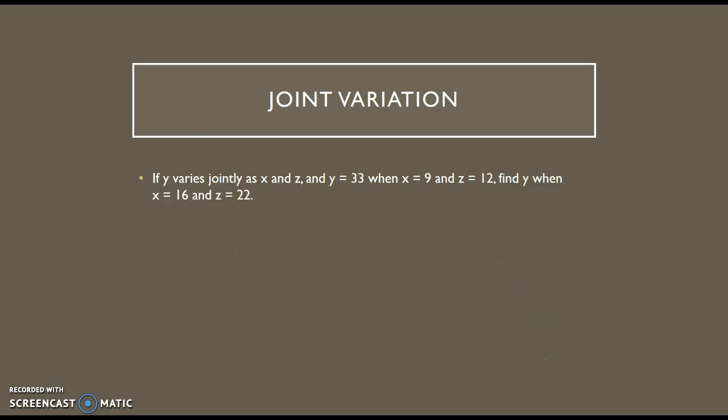If y varies jointly as x and z, and y equals 33 when x equals 9 and z equals 12, find y when x equals 16 and z equals 22. So now find y, and it gives me x and z. So if I write my original equation, y equals kxz, I want to find y, and I can plug in 16 for x, 22 for z.